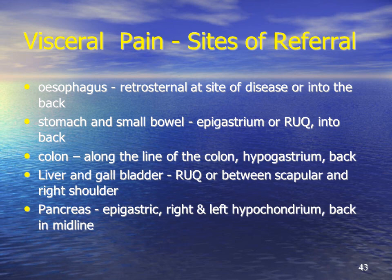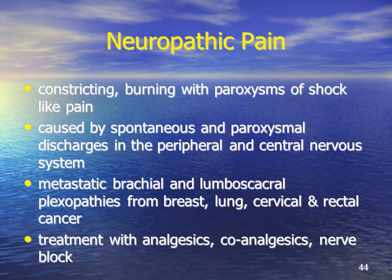Pain coming from the liver or the biliary tract is usually felt in the right upper quadrant but can radiate round to the back between the scapula and the right shoulder. Pancreatic pain, which can be extremely severe, usually starts off anteriorly and can be epigastric, but can radiate into the right and left hypochondriums and then classically radiate almost straight through into the back in the midline. A different sort of pain is neuropathic pain.